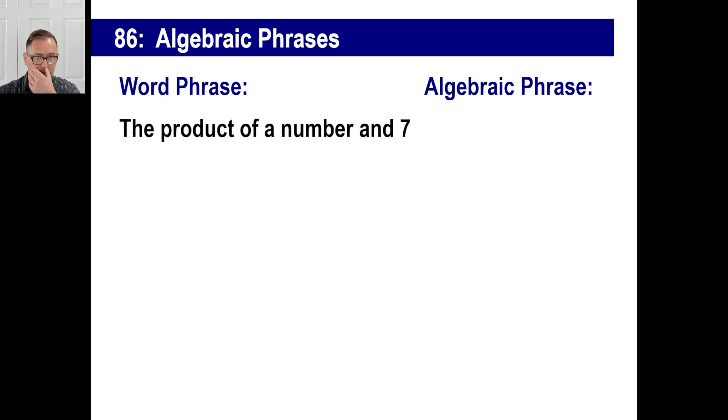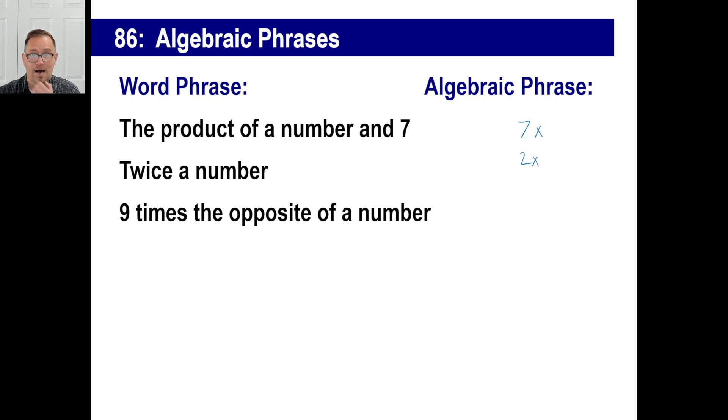How about another one? The product of a number and seven. Product means to multiply, right? So you just go, okay, seven times X. There we go. Twice a number? Well, that's going to be a number, and then twice that will be just two times X, right? How about nine times the opposite of a number? You could go nine times. You could put a dot here, or you could put parentheses. A number would just be the X, right? But the opposite of a number would be minus X. So nine times minus X, that would be the opposite of nine X, right? In other words, this is a positive nine. That's a negative. A positive times a negative is a negative. There you go.